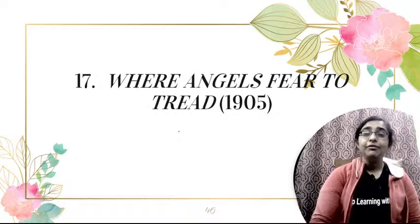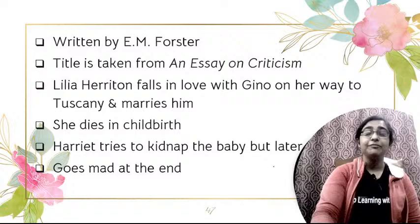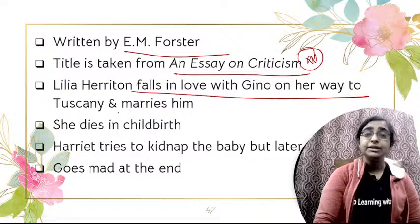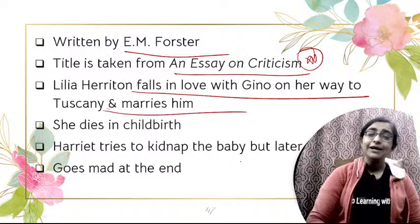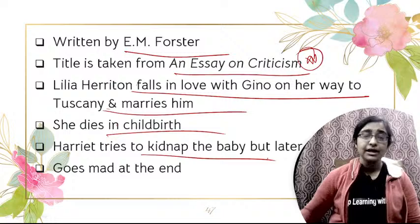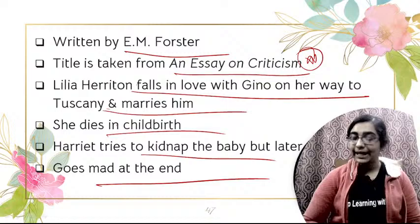Next is Where Angels Fear to Tread, published in 1905, the debut novel of E.M. Forster. The title is taken from Alexander Pope's An Essay on Criticism — 'Fools rush in where angels fear to tread.' Lilia Herriton falls in love with Gino on her way to Tuscany and marries him. Lilia then dies in childbirth. Another character, Harriet, tries to kidnap the baby but later feels guilty and goes mad.